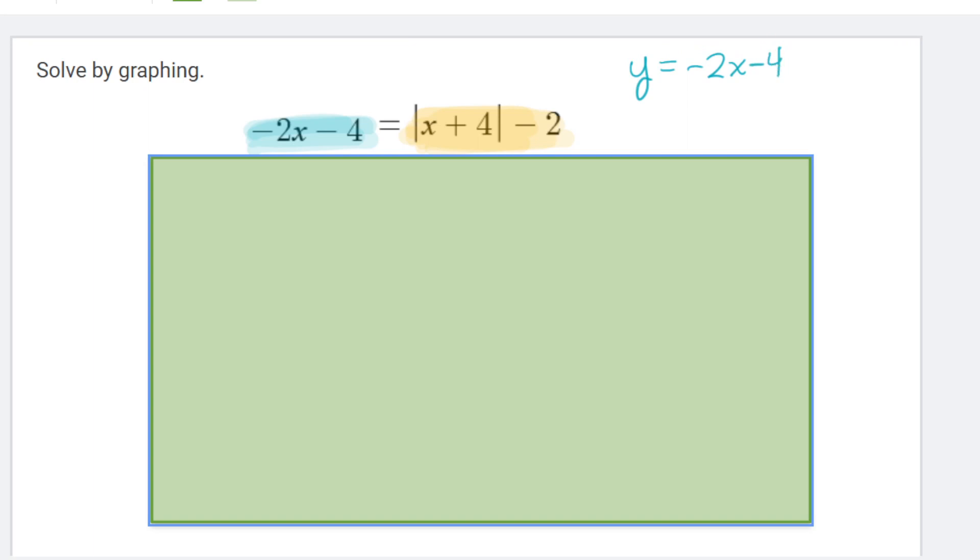So that blue piece turns into the linear equation, y equals negative 2x minus 4. So that's going to graph a line on my graph. This absolute value side, the yellow side, that one is going to make a V shape on my graph.